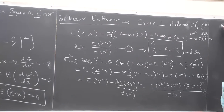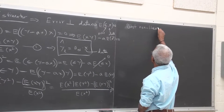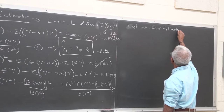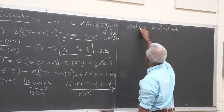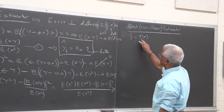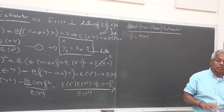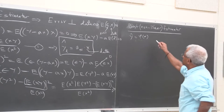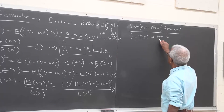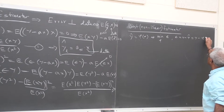Now we look at the best non-linear estimator — the best estimator without any restrictions. There we use y-hat to be some function phi of x. The whole point is we are not restricting ourselves to linear or quadratic at this point. The criterion is the same: minimize the mean squared error over phi, where error is y minus phi(x).